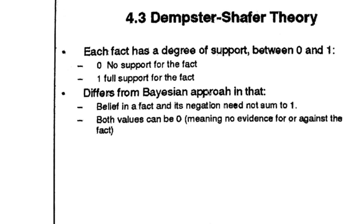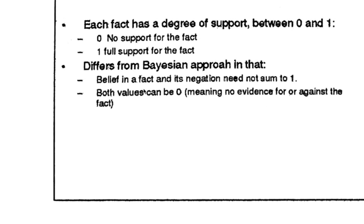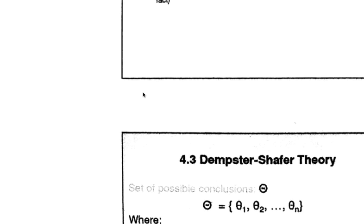How is it different from the Bayesian approach? In the Bayesian approach, if an event X has happened, what is the probability that another event Y has also happened? The belief, or probability of that event happening given another event happened, equals 1 minus the probability that that event does not happen given Y already happened. So the negation and the belief must sum to 1 in the Bayesian approach. But in Dempster-Shafer Theory that is not the case — both the probability of happening and not happening can be 0.